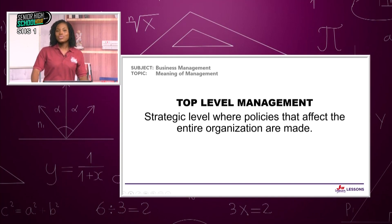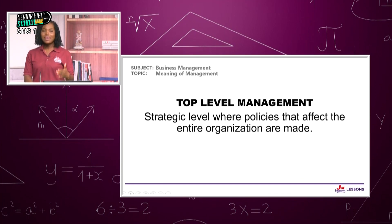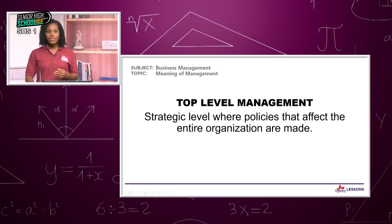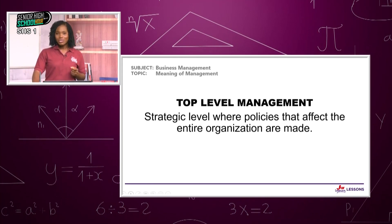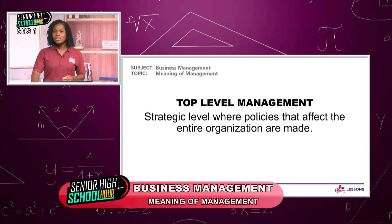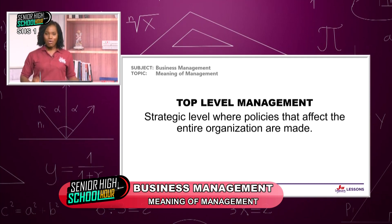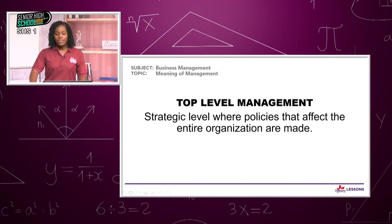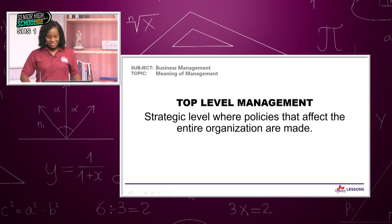At the top, which is the peak, will be those taking strategic-level management decisions. At this level, plans, policies, or organization goals that cut across the entire organization are made. There are what we call the top-level managers — these managers are the people that take strategic plans. At the top-level management, we also call it the strategic level of management. This is where they take strategies, develop policies, develop plans, and you know that policies cover the entire organization. The top-level management is the strategic level where policies that affect the entire organization are made.